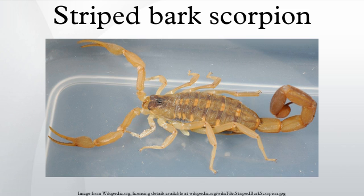Unlike most species of scorpion, C. vittatus is social, presenting it with more opportunities to mate and compete for mates. Consequently, the process of reproduction is one that is both intricate and extensive. Males begin by engaging in behavior to establish dominance to mate; they engage in a showdown that highlights tail-waving and shifting until one male backs down.